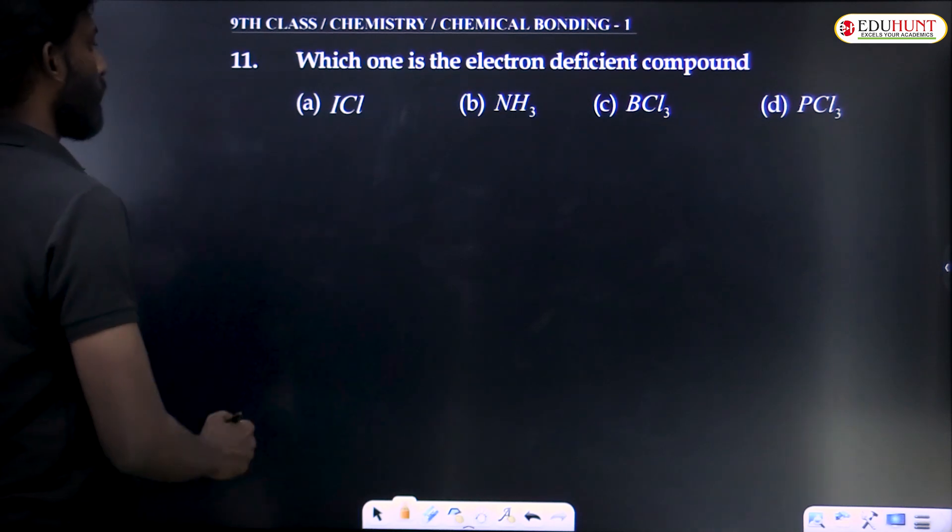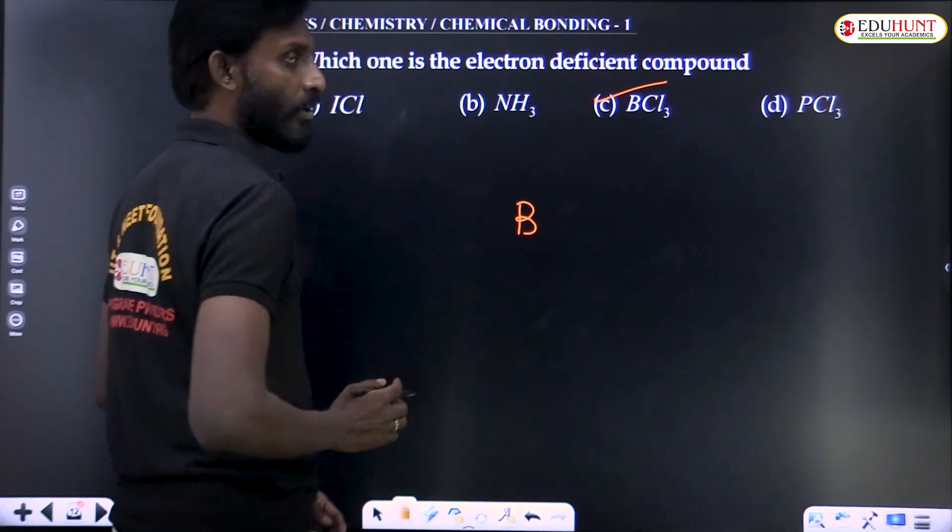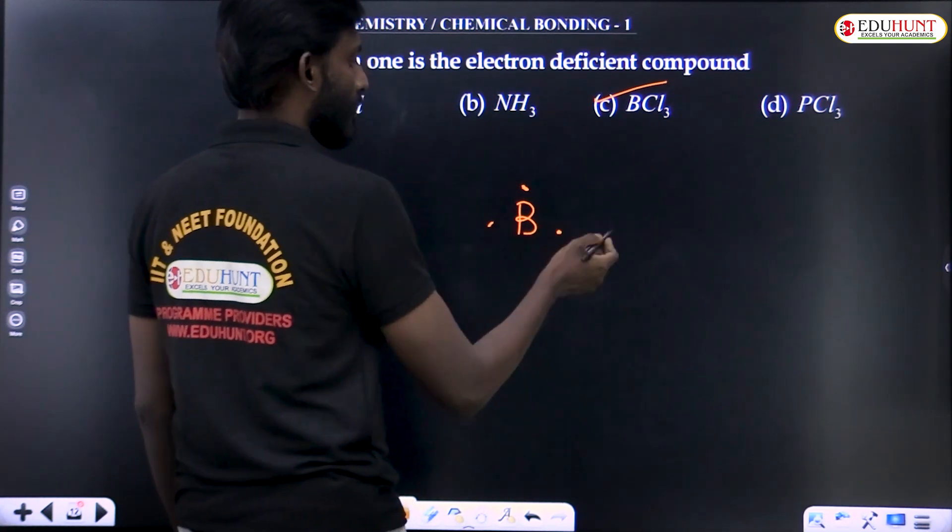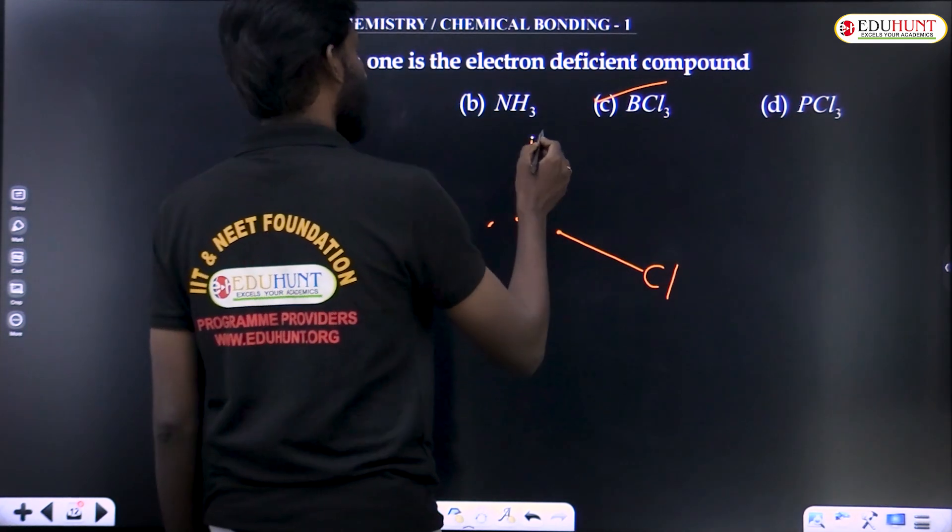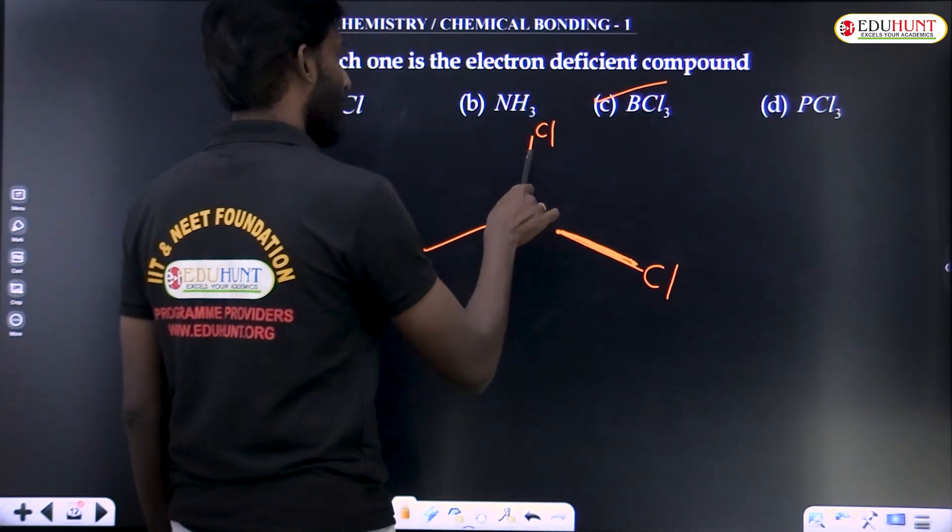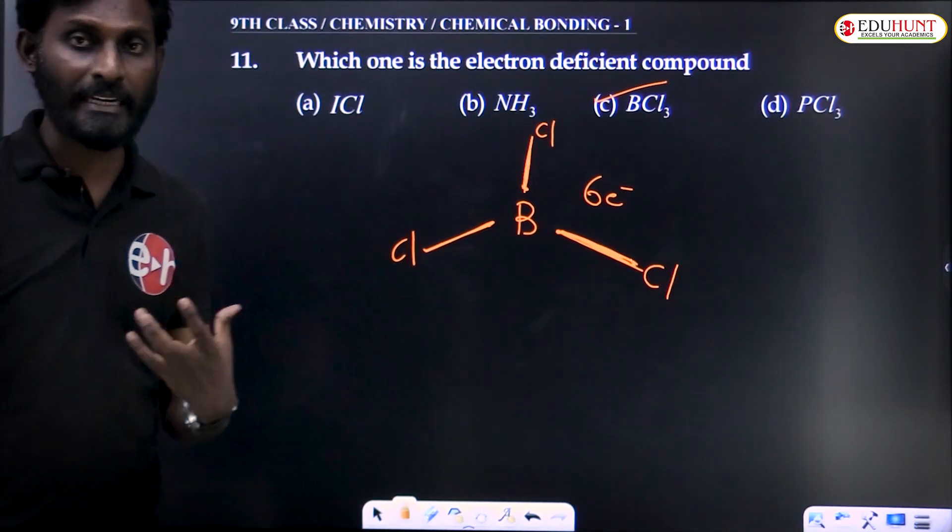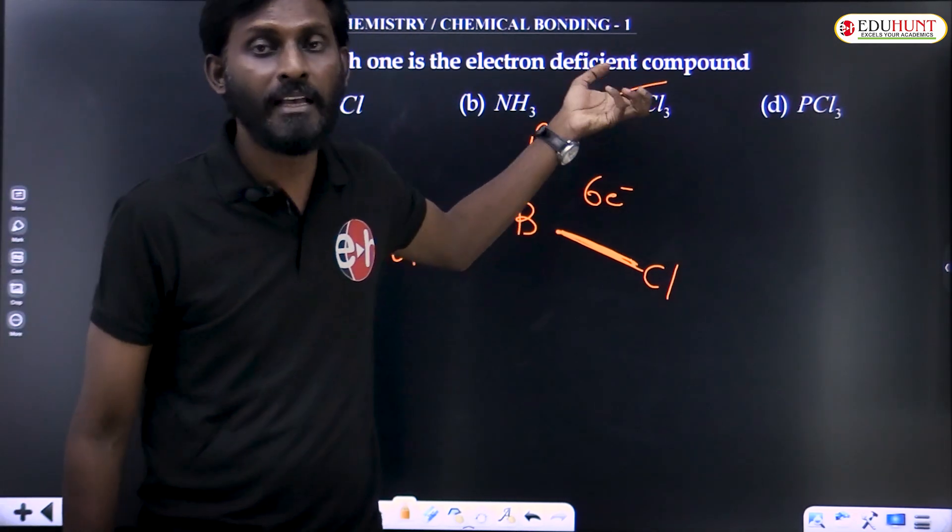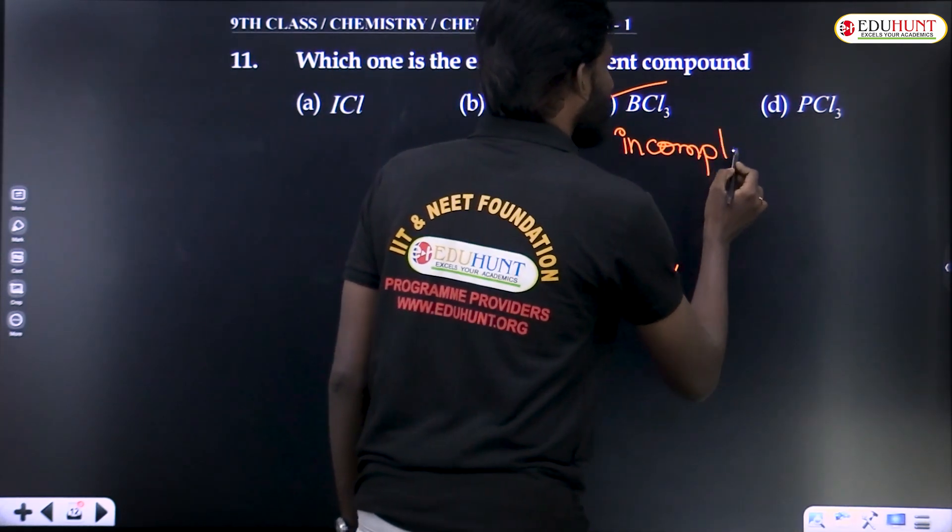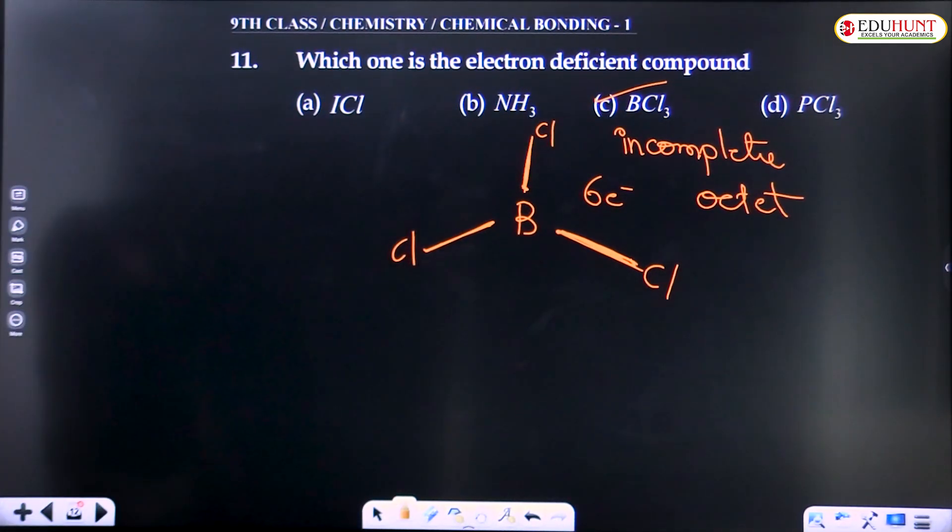Which one is the electron deficient compound? BCl3. Boron's outermost configuration is 2s2 2p1. Three electrons in the outermost shell. These three electrons share with three chlorines. One with this, one with this, one with this. After boron forms bonds, in its outer shell there are six electrons: 1, 2, 3, 4, 5, 6. Only six electrons, not eight. Octet is not complete. BCl3 forms but the central atom's octet is incomplete. Such compounds are called electron deficient compounds.